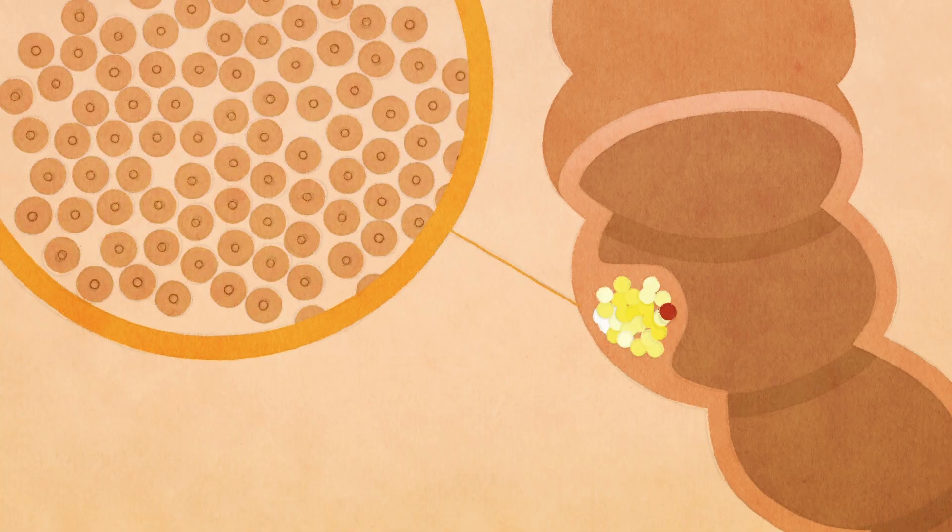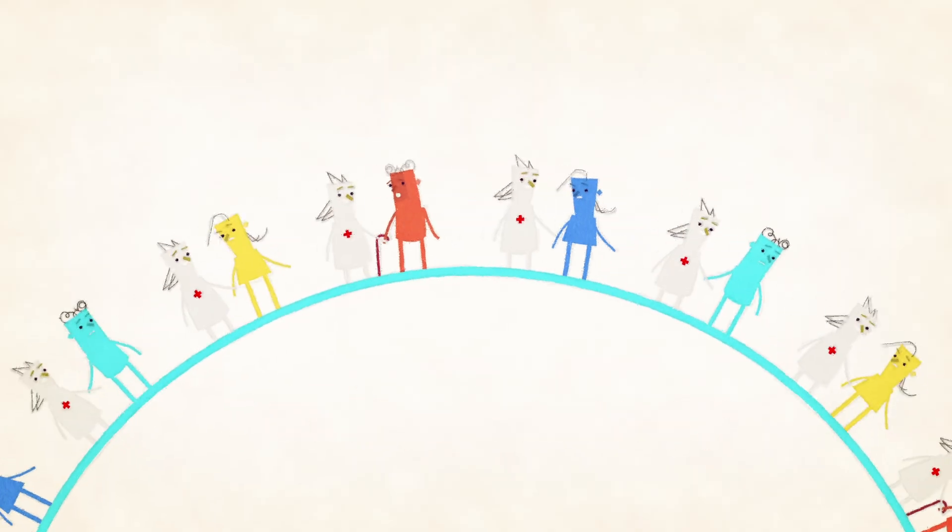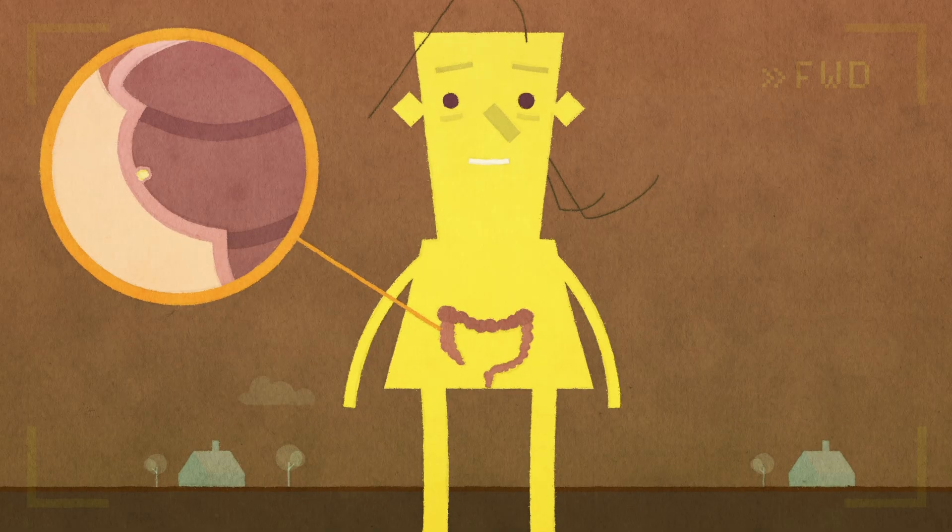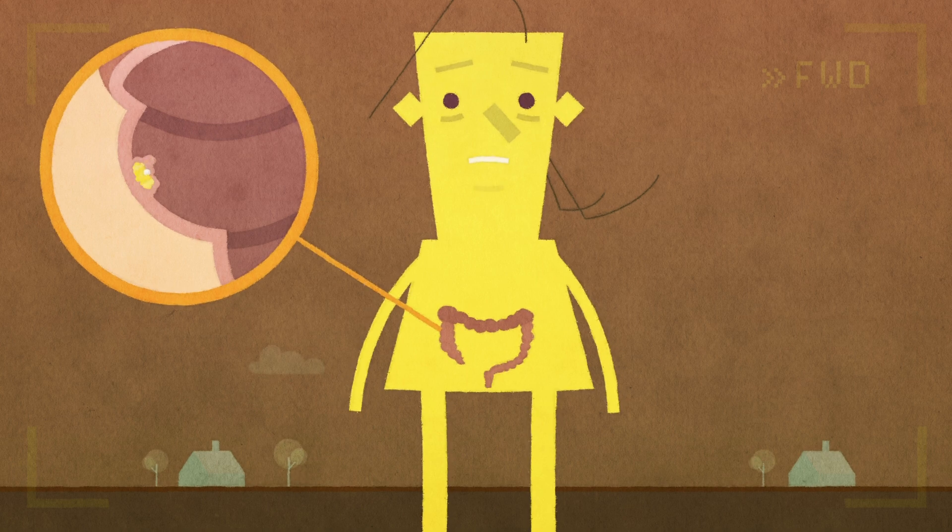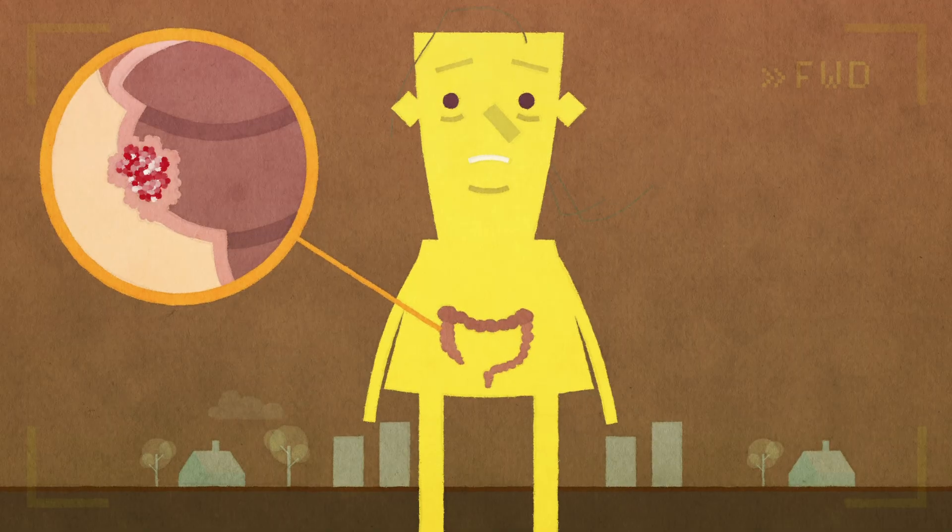At that point, they can transform into colon cancer, one of the most prevalent and preventable forms of cancer in the world. That's a slow process. Though growth times vary, it often takes around 10 years for a small polyp to grow and develop into a cancerous one.